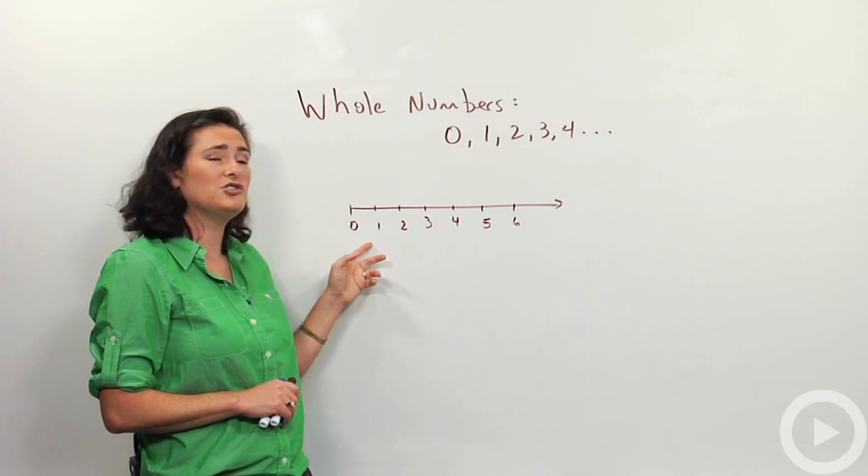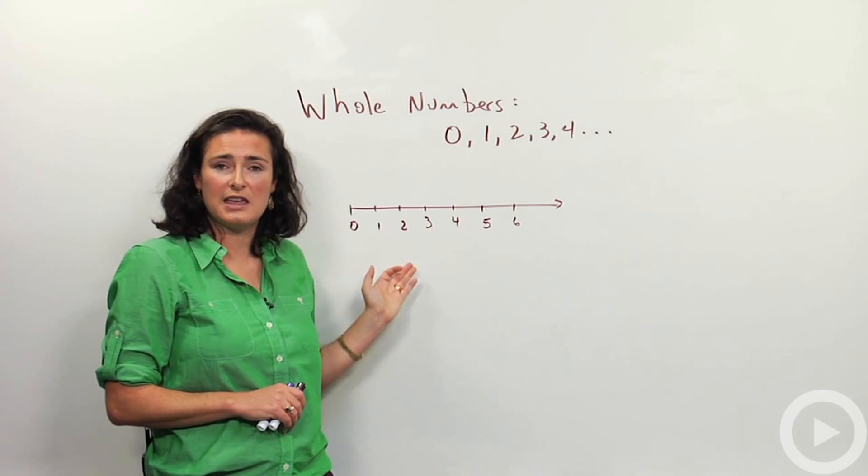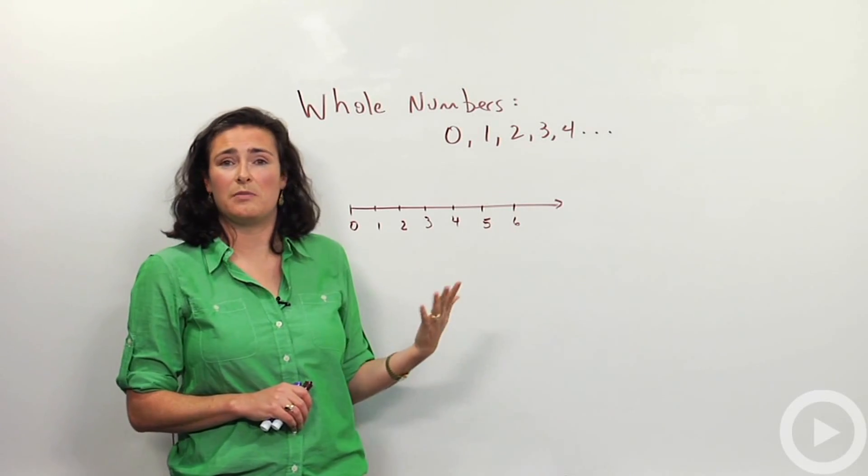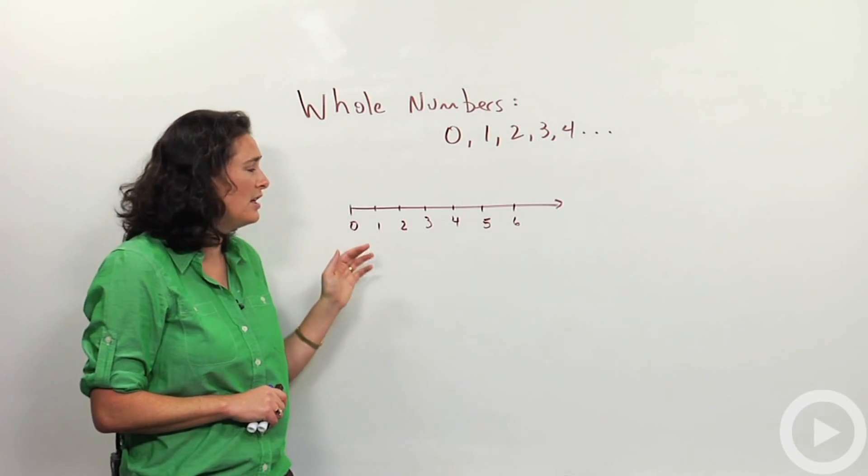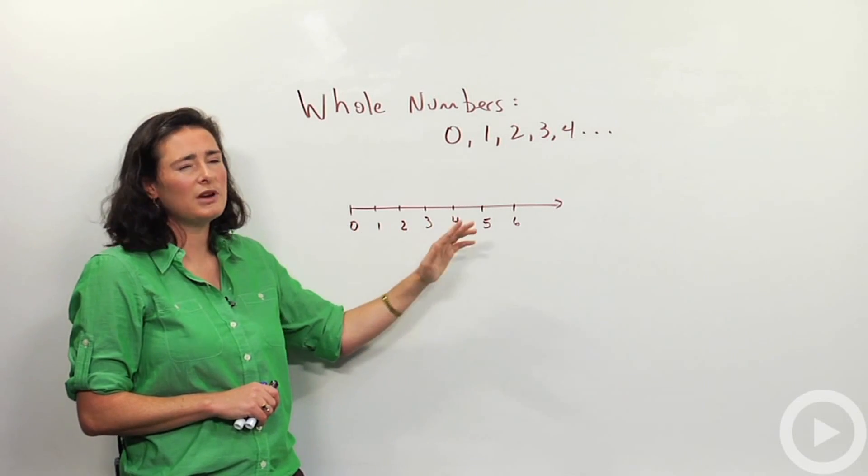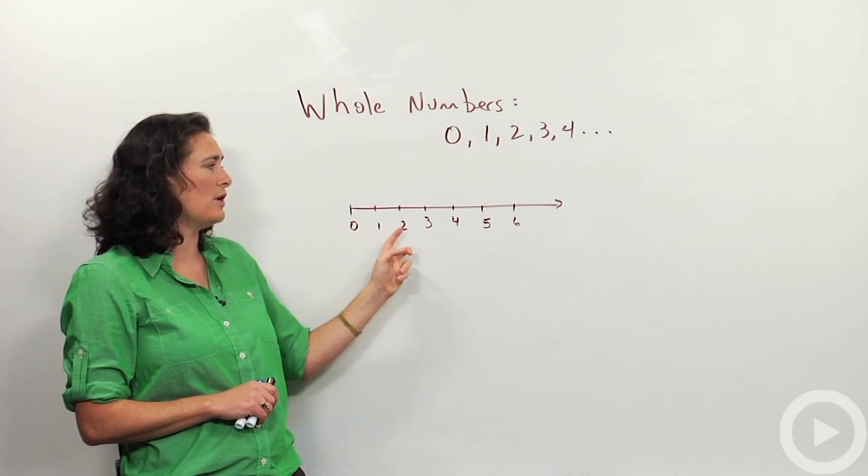And then this is often drawn on a number line and some of the thinking that we're going to do around whole numbers will be based on a number line. So I just want to make sure you're clear on what that looks like as well. A number line is a line where there's markings hopefully pretty evenly spaced out for 0, 1, 2, 3, 4.